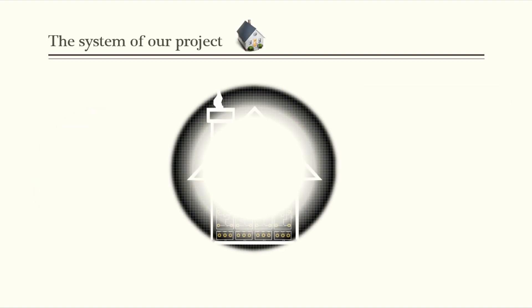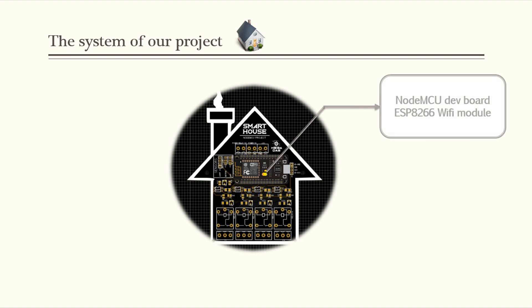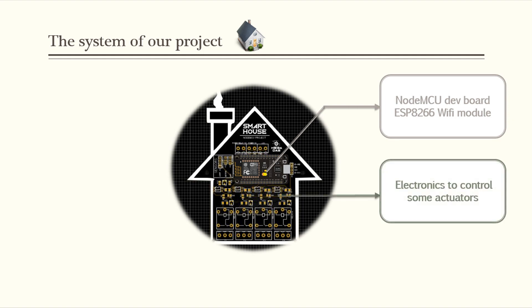In our project, we will create the main system which is an electronic circuit board based on a NodeMCU dev board, which already has a Wi-Fi feature built in. This board will be surrounded by some electronic components like relays, optocouplers, LEDs, and sensors.